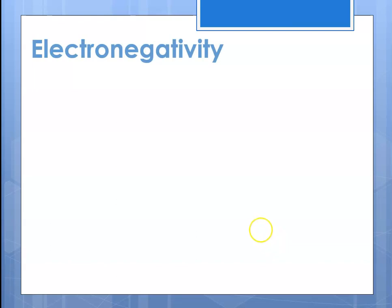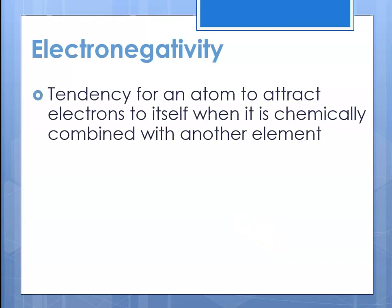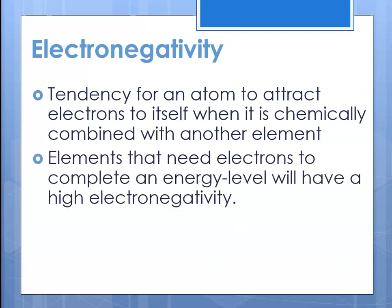What is electronegativity? Electronegativity is defined as the tendency for an atom to attract electrons to itself when chemically combined with another element. You can think of it as the bully factor — if one atom has high electronegativity and encounters another with low electronegativity, it just grabs the electrons. In general, elements that need electrons to complete their energy level will have a high electronegativity.